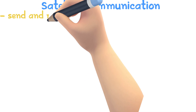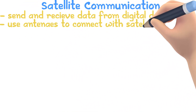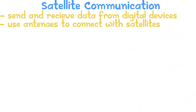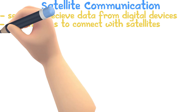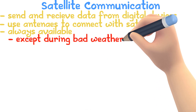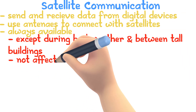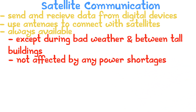Satellite Communication: satellites send and receive data from digital devices. Some devices use an antenna to connect to a satellite. Satellites are always available except during bad weather or when you are surrounded by tall buildings. They are also not affected by power shortages.